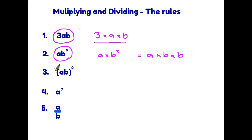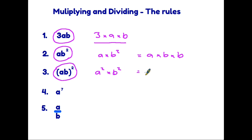On the other hand, if we look at rule three, we now have a set of brackets around the ab and the squared is on the outside. This means that the squared doesn't apply just to the b as it did in the previous example, but it applies to everything inside those brackets. So actually it is now telling us that we have a² times b². And we can expand that further because a squared is a times a and b squared is b times b. So the brackets mean everything inside is squared.